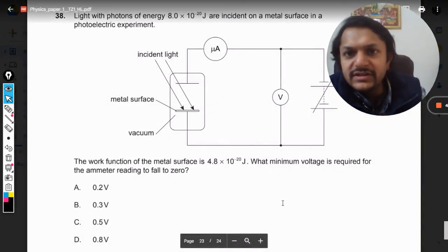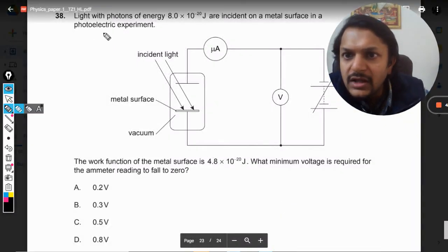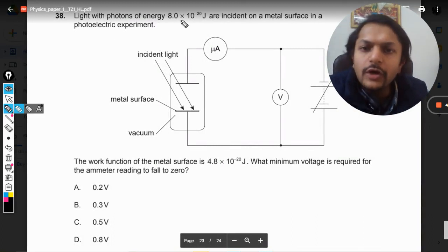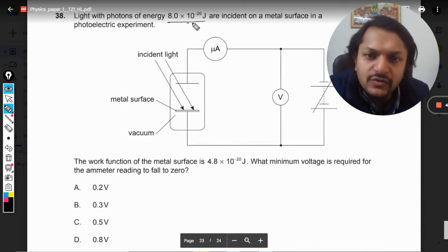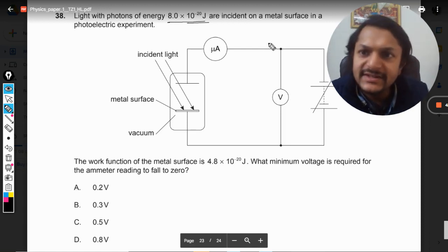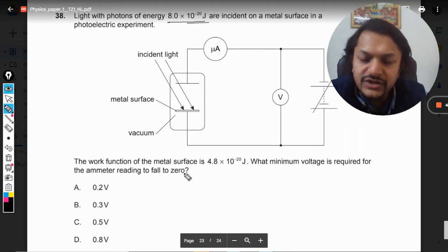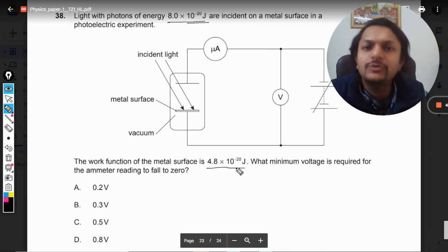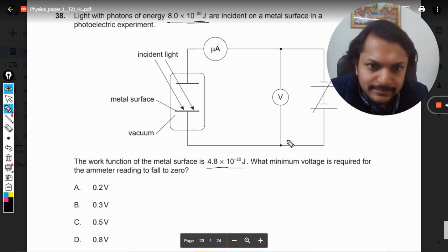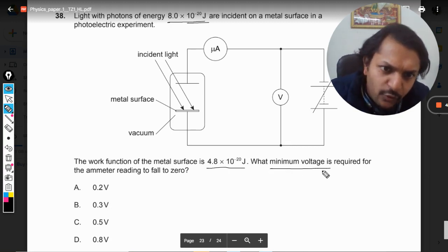Okay, dear students, let us see what is there in this question. The light with photons of energy 8×10^-20 joules are incident on a metal surface in a photoelectric experiment as shown in the diagram. The work function of the metal surface is given as 4.8×10^-20. What minimum voltage is required for the ammeter reading to fall to zero?